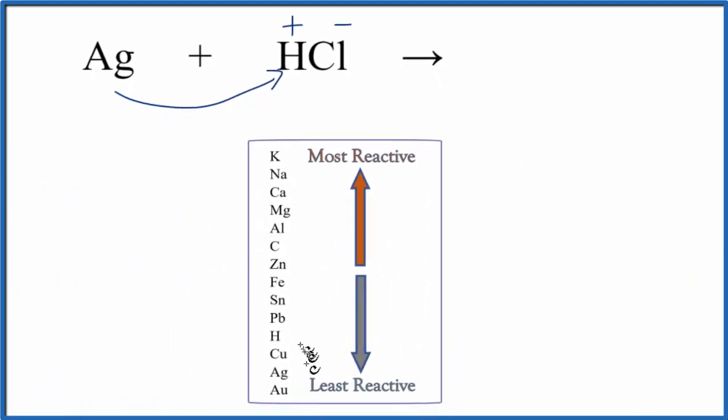If we can find silver, Ag is way down near the bottom with the least reactive of the metals. Hydrogen is right here, so it's more reactive than silver. It's higher up on our activity series because hydrogen is more reactive than silver.